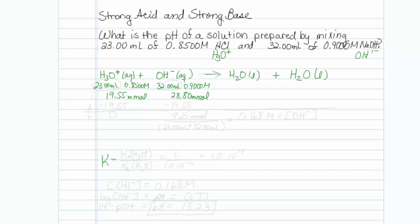Remember that K is going to be equal to the Ka of the reacting acid, so that would be hydronium, over the Ka of the produced acid. That would be water.